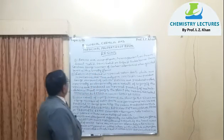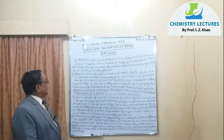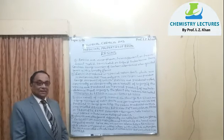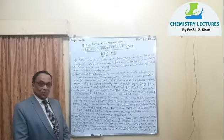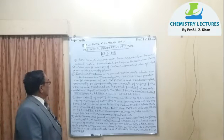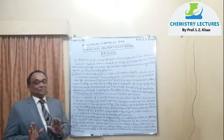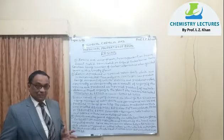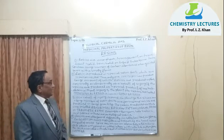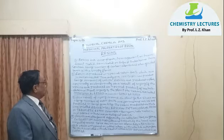Resins are amorphous, transparent, or translucent — solid, semi-solid, or liquid substances. Resins contain a large number of carbon atoms and when ignited burn with a smoky flame due to high carbon content. They are produced in special resin ducts found in plants, and these ducts are interconnected. Therefore, only one incision or cutting can produce a large amount of resin — for example, from the opium plant, mango, or gum arabic — by making an incision over a large area.